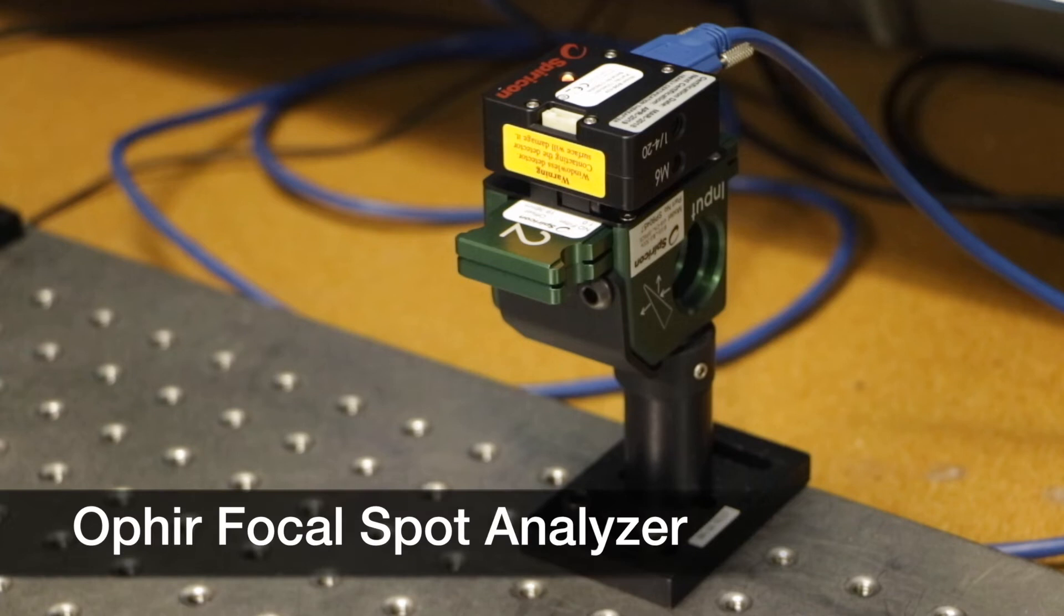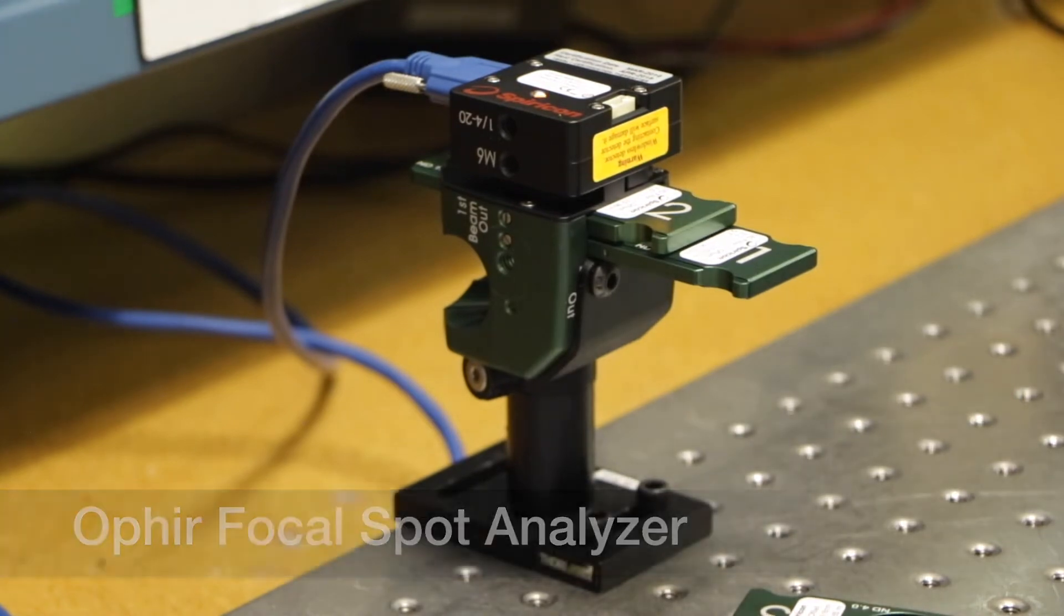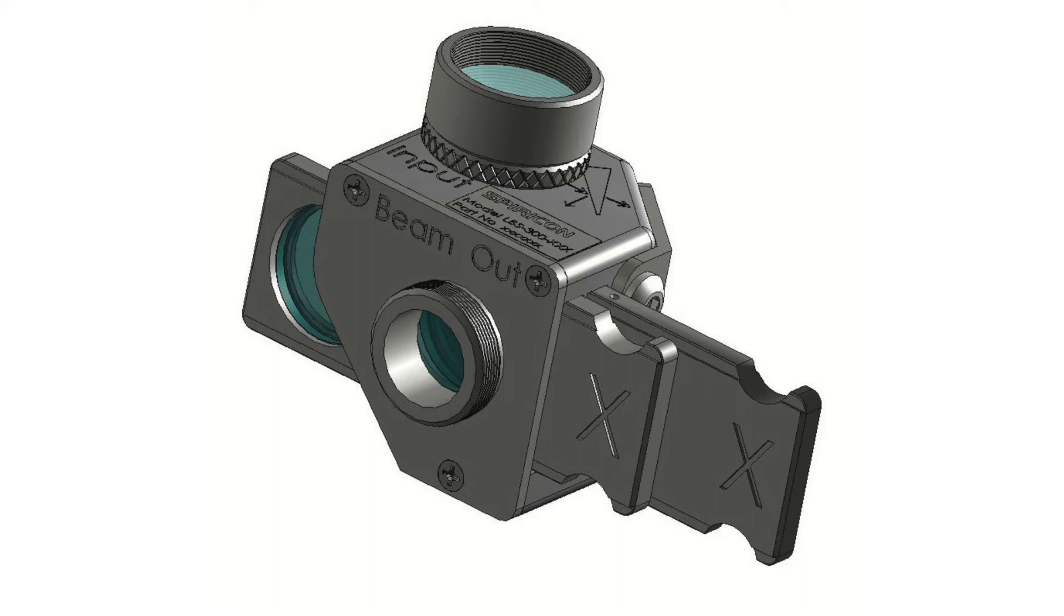The Ophir focal spot analyzer allows users to understand exactly where along the optical path the measurement is being made, as referenced from the front surface of the device's input aperture with plus or minus 50 micron accuracy.